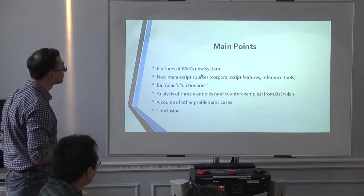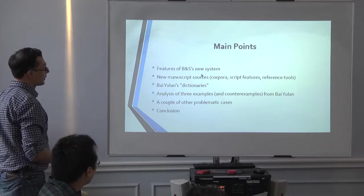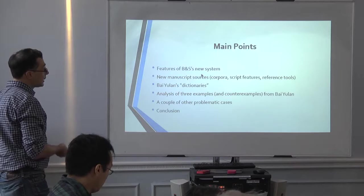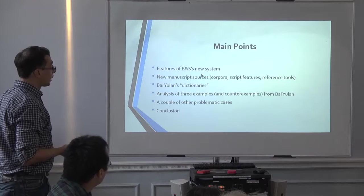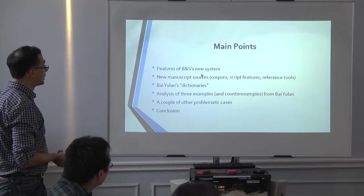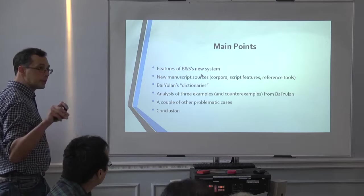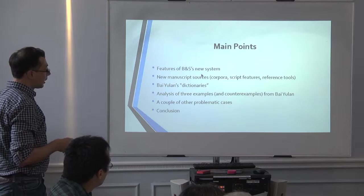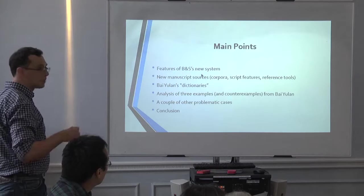So mainly I deal with these points in sequence: what I believe are the main features of the book, the new system, how they deal with new manuscript sources, but especially how scholars basically approach these sources, what are the common tools they use, what are the common problems made by scholars. Then I will focus specifically on the usage of Thailan's dictionary in the book as a way to test some hypotheses and to see some counterexamples in the spirit explicit in the book of falsifiability, really making claims that can be tested one way or another.